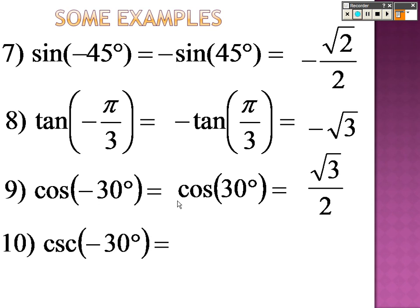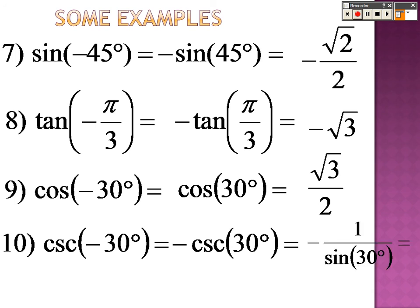Number 10: find cosecant of negative 30 degrees. Pull out the negative, so it's negative cosecant of 30 degrees. Find sine of 30 degrees first: put down the ring finger, sine is square root of the left over 2, which is 1 over 2. Flip it to get cosecant: that's 2 over 1, which is 2. With the negative, the answer is negative 2.